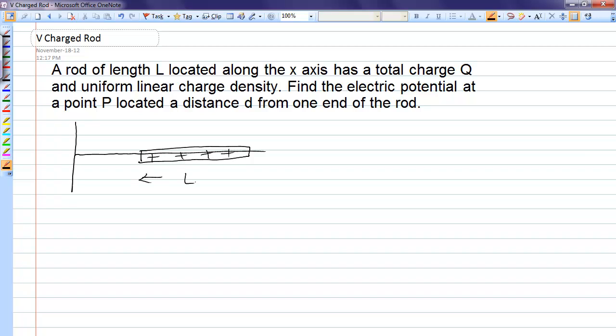The length of the rod is L, the distance from one end of the rod to the origin is D, and we want the voltage here. The formula sheet has the formula that the voltage is the integral of kdq over r, where r is the distance from the point of interest to the little bit of charge. This is a scalar quantity, and it's r, not r squared.